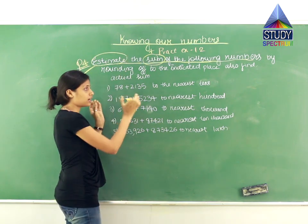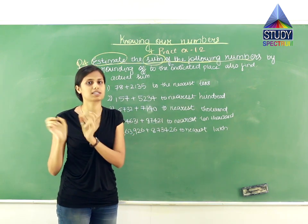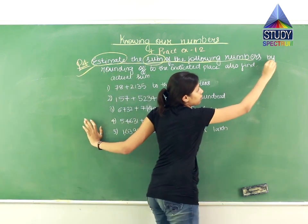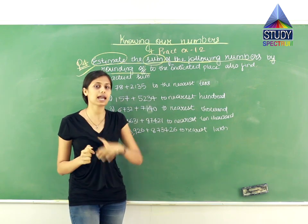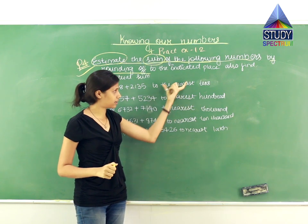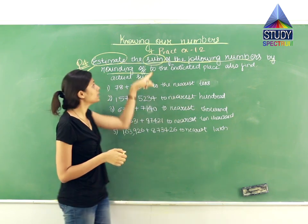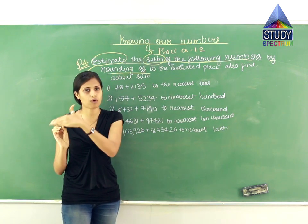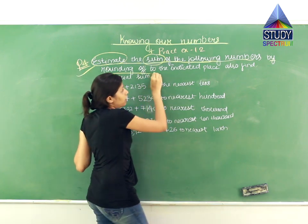They are telling you the numbers are given to you, and in the question they are also mentioning what the estimate has to be. You have to find the estimated answers by rounding off the digits given in the question, and then find the estimated sum. Sum means addition. So you have to round off each number and then find the answer.